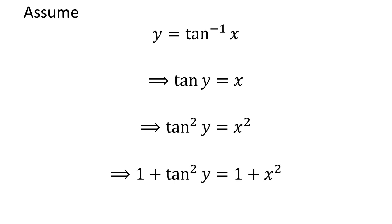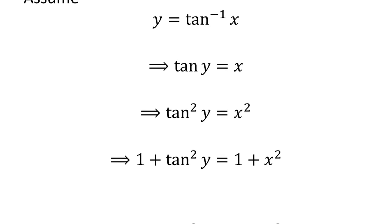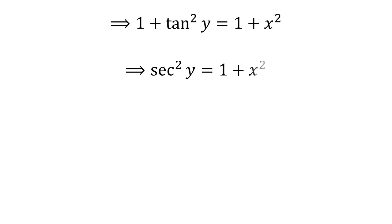Adding 1 to both sides gives us 1 plus tangent squared of y is equal to 1 plus x squared. By the famous trigonometric identity, 1 plus tangent squared of y is equal to secant squared of y.